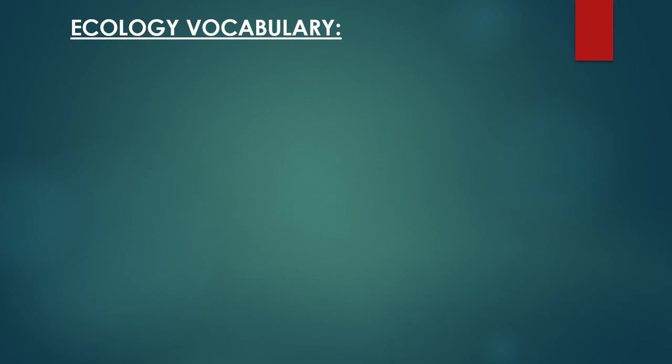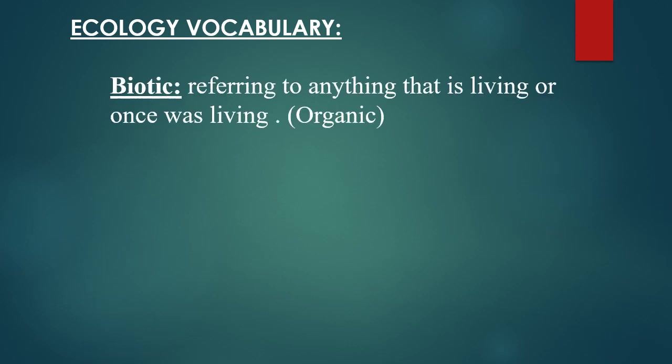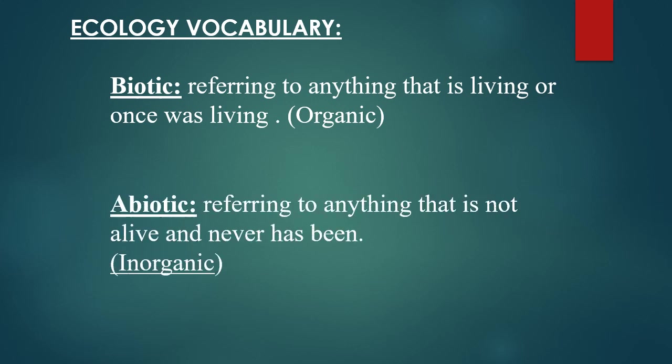So first words are biotic and abiotic. Now these can seem simple enough but they can have some confusing parts to them. Biotic refers to anything that is living or that was once living or alive. So obviously you yourself are biotic. Animals, plants, protists, funguses, bacteria — those are all biotic things.